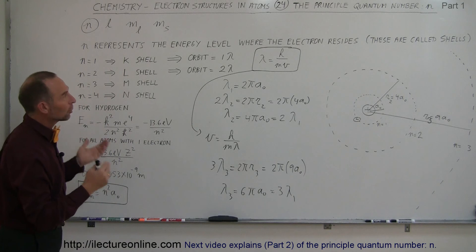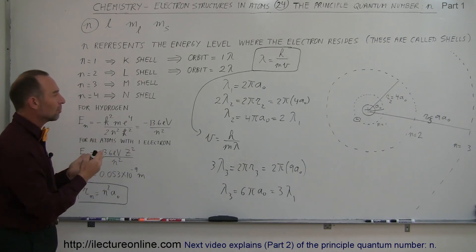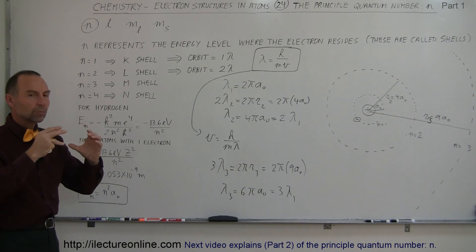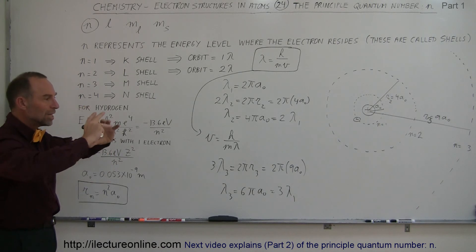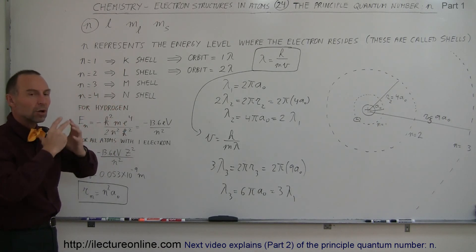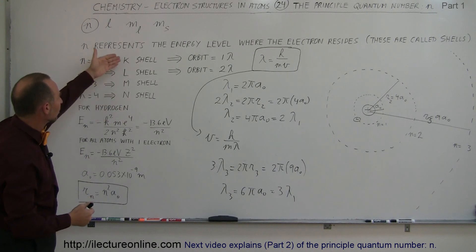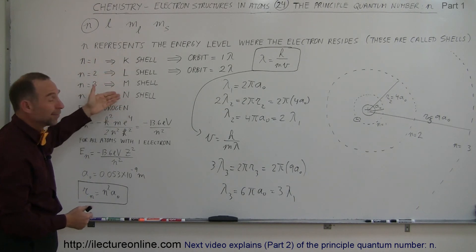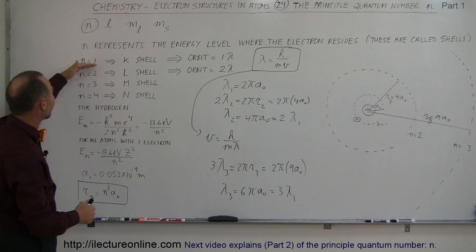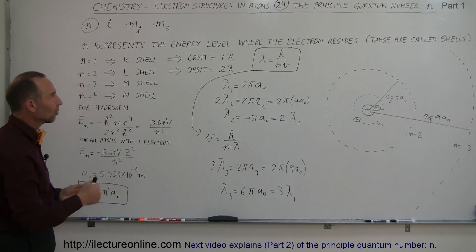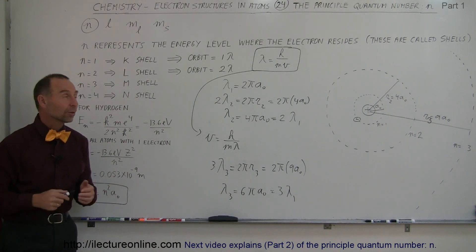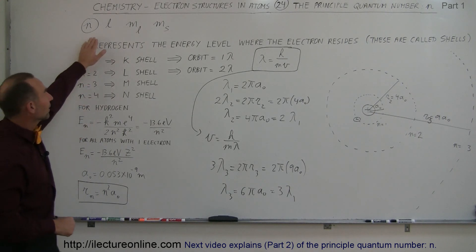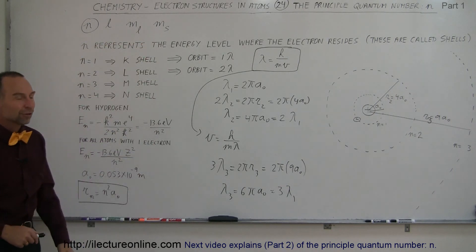So the principal quantum number n simply describes the energy level the electron occupies, which corresponds to regions around the nucleus called shells — named the K-shell, L-shell, M-shell, N-shell, O-shell, P-shell, Q-shell, and so forth for higher and higher energy levels. That's our first basic quantum number, the principal quantum number. We'll talk about the other three in future videos.